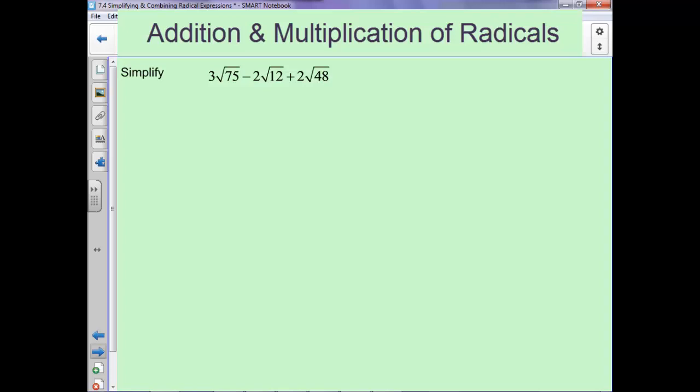So let's go ahead and simplify each of these individually, and then combine what we can. So the 75 is 25 and 3, which is 5 and 5, so we'll have a 5 squared times 3, which means this 5 squared of that is 5, so we'll have 15 square root of 3, because you're already going to multiply it by this 3 that's out here.